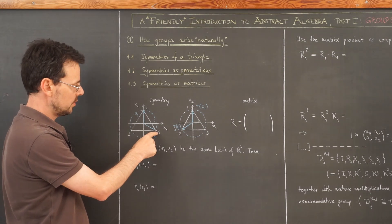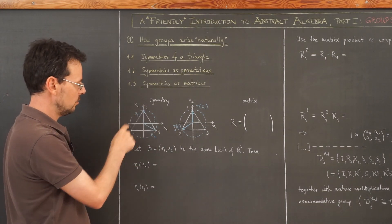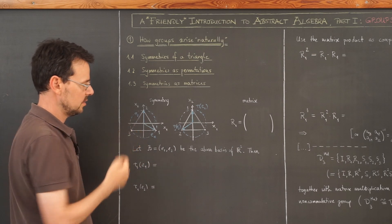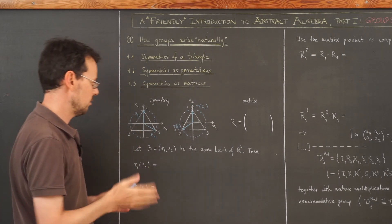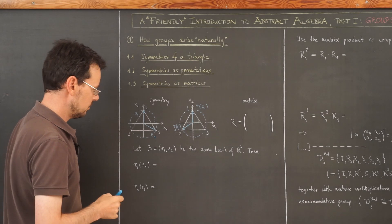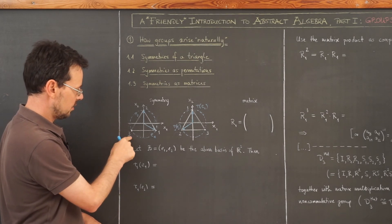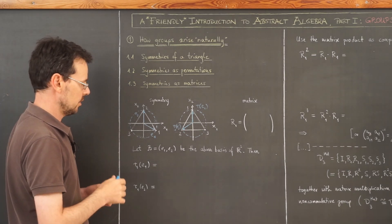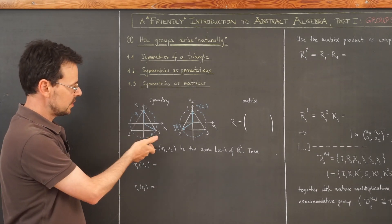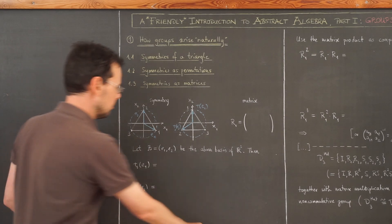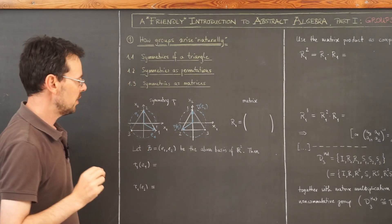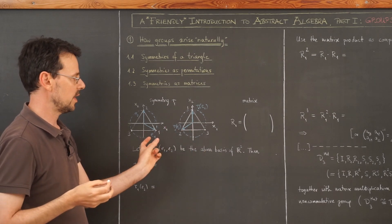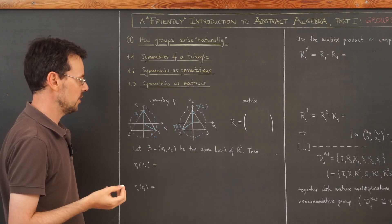And this time I label the vertices like that one, two, three, because I want this vector to be called E1 and this here E2. That doesn't really matter. But just to avoid confusion, usually we started with the label 1 here, but this is not important. So now what happens if I apply the symmetry that we called R1 so far, which is rotating the triangle by 120 degrees?